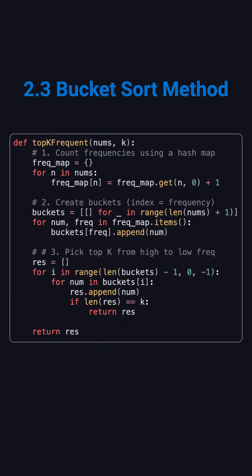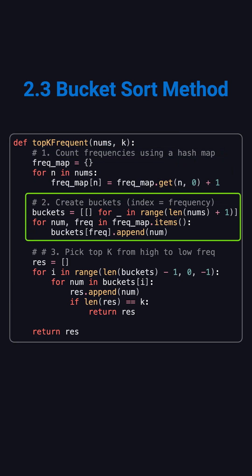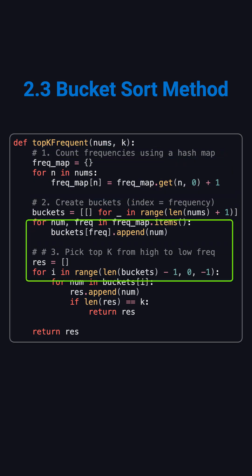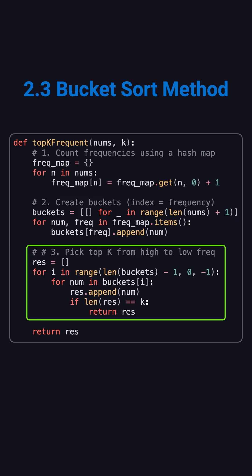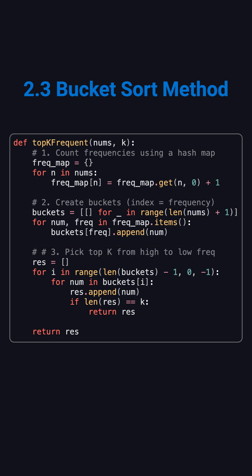In Python, it's straightforward. Build a frequency hash map, create the buckets, fill them by frequency, then walk backward through the buckets until you get k numbers. Done. Efficient and elegant.